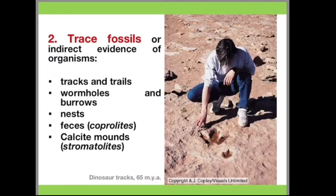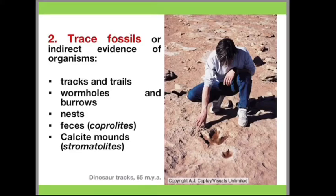Another way is through trace fossils. These record the activity of an organism. They include, for example, tracks and trails, wormholes and burrows, nests, and feces. In this figure, it shows dinosaur tracks dated from 65 million years ago. With these tracks and trails, it tells us that dinosaurs really existed, and that some other organisms that may have existed before are really true.